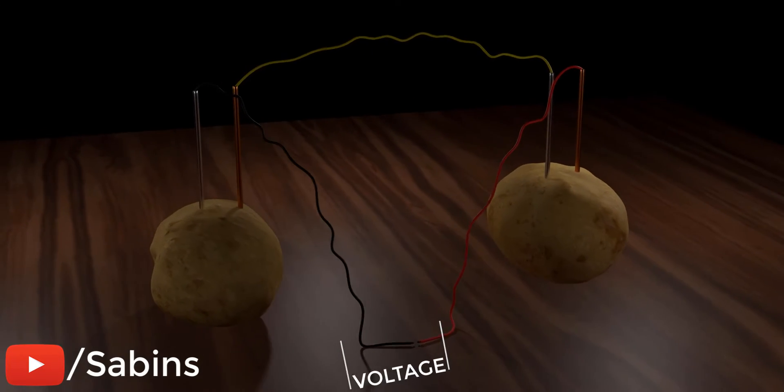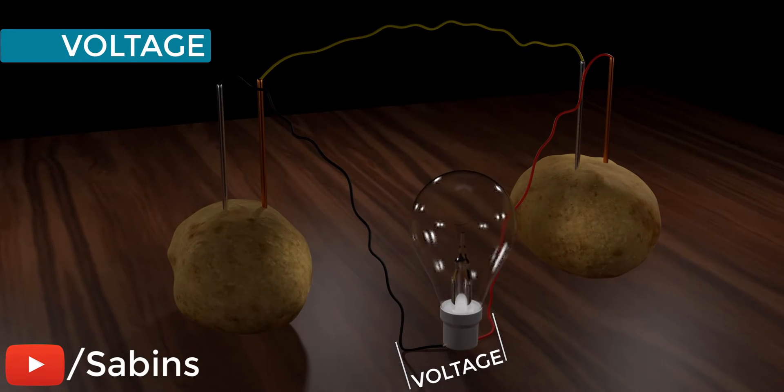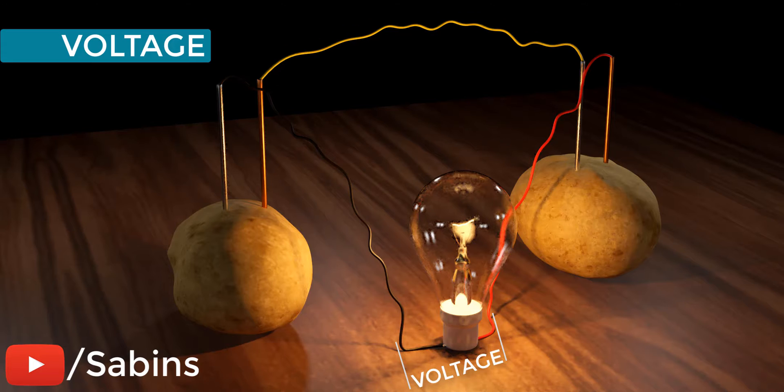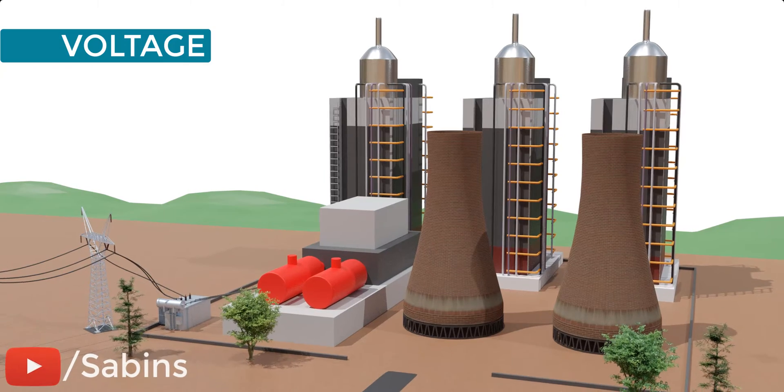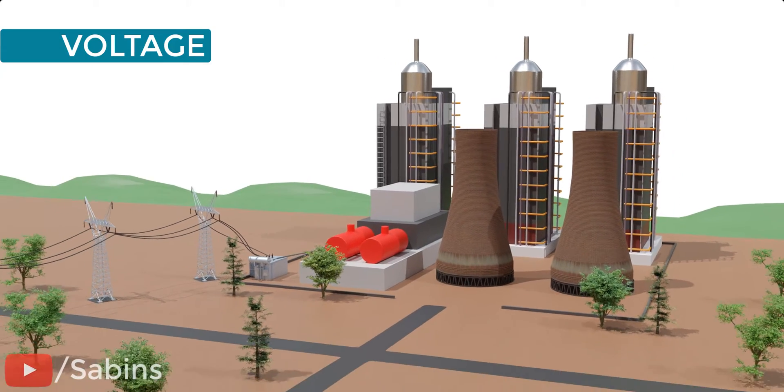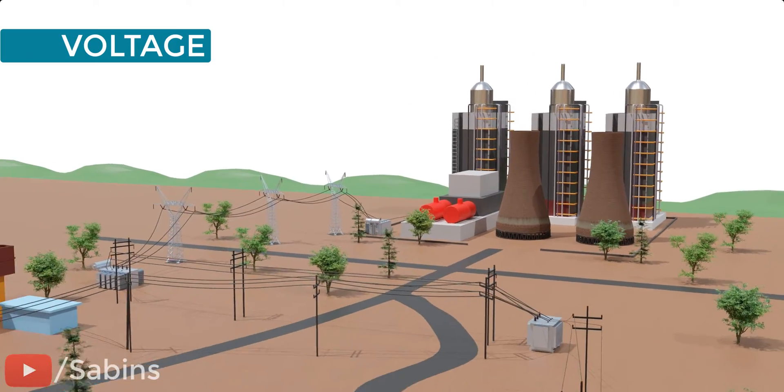A potato battery can produce voltage, and this voltage induces current flow. You can see different levels of voltage in power distribution. What is the meaning of this commonly used term in physics and engineering?